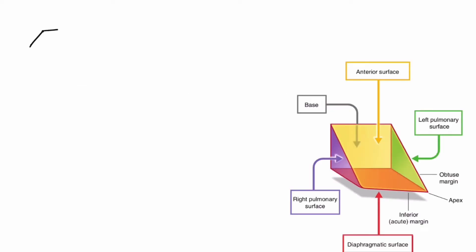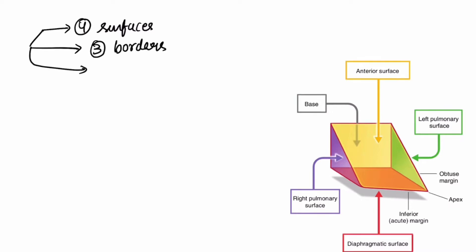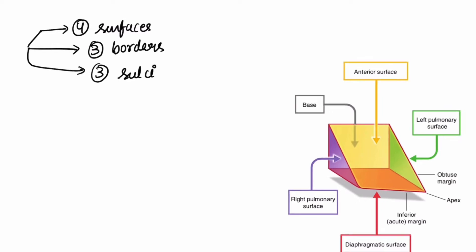Hello everyone. Our topic for today is the external features of the heart. It has four surfaces, three borders, and three sulci. Now let us look at them separately. First, let us discuss about borders.